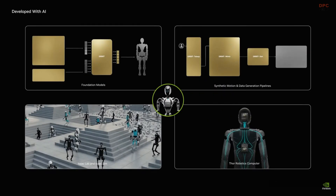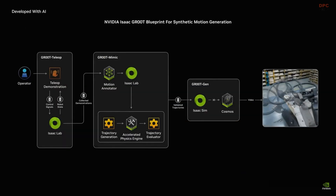The NVIDIA Isaac Groot Blueprint for Synthetic Motion Generation is a simulation workflow for imitation learning, enabling developers to generate exponentially large datasets from a small number of demonstrations.